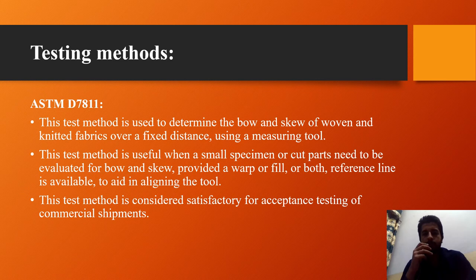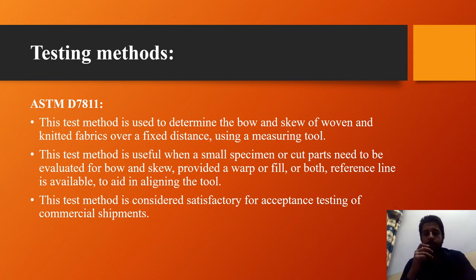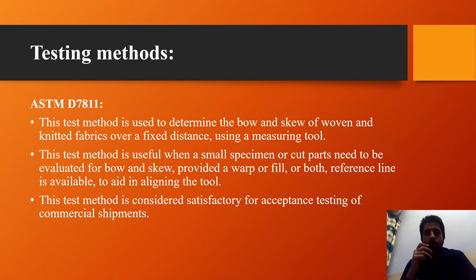This test method is useful when a small specimen or cut parts need to be evaluated for buoyant skew, provided a warp or fill or both reference lines are available to aid in aligning the tool. The method provides a standard procedure for obtaining data for research and development, quality control, acceptance and rejection under specification for special purposes. The data obtained is not necessarily the same as obtained under actual use environments, but this test method is considered satisfactory for acceptance testing of commercial shipments.